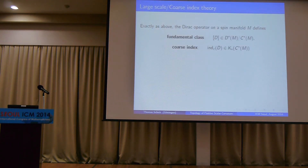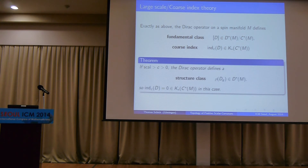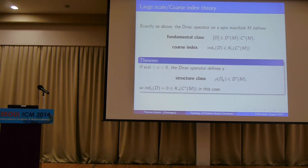The whole construction now works exactly as before: we get a fundamental class as an invertible mod in D*(M)/C*(M), and applying the boundary map gives the coarse index in K-theory of C*(M). If the scalar curvature is positive and bounded below by some constant c > 0, we can lift the fundamental class to a structure class in K-theory of D*(M), and the coarse index in K-theory of C*(M) vanishes.